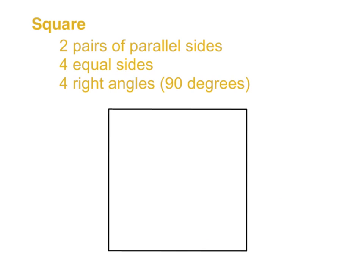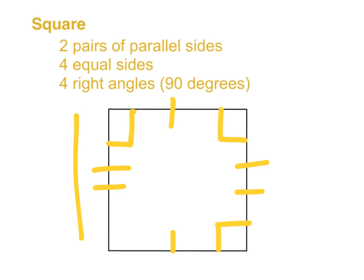And now for the square. The square has two pairs of parallel sides — the top and the bottom are parallel, and both sides are parallel to each other. They also have four equal sides, so this length is the same all the way around the square. They also have four right angles, just like a rectangle.